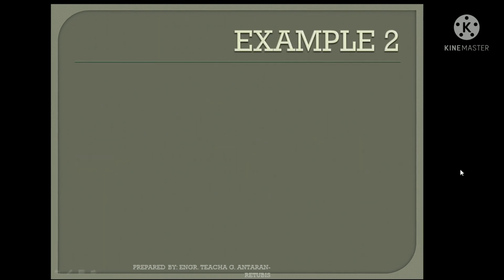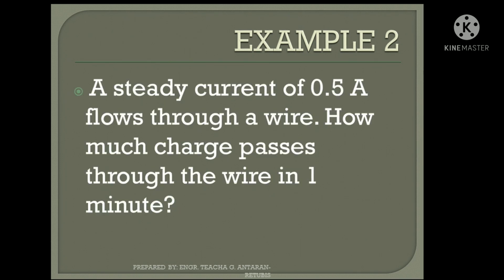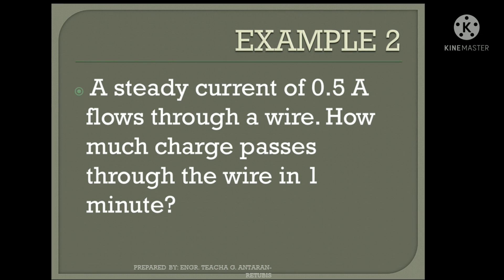For example number 2: a steady current of 0.5 ampere flows through a wire. How much charge passes through the wire in 1 minute? This is similar to example 1. The difference is that here we are asked for the charge, whereas in example 1 the number of electrons was required.